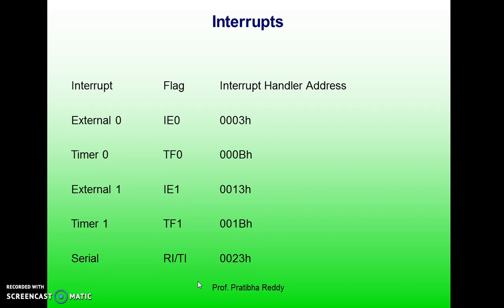For every interrupt there must be an interrupt service routine or interrupt handler. When an interrupt is invoked, the microcontroller runs the interrupt service routine. For every interrupt there is a fixed location in memory that holds the address of its ISR. The group of memory locations set aside to hold the addresses of ISRs is called the interrupt vector table, or we can call it the interrupt handler address.